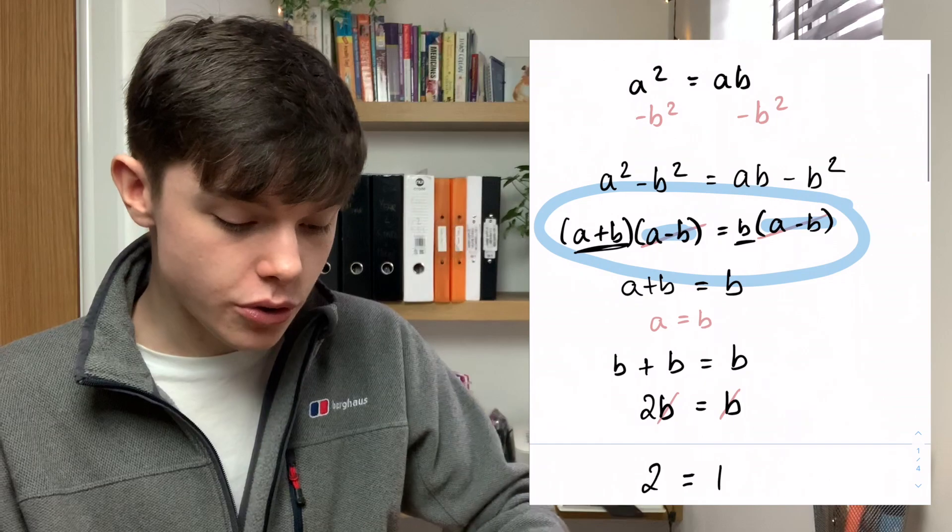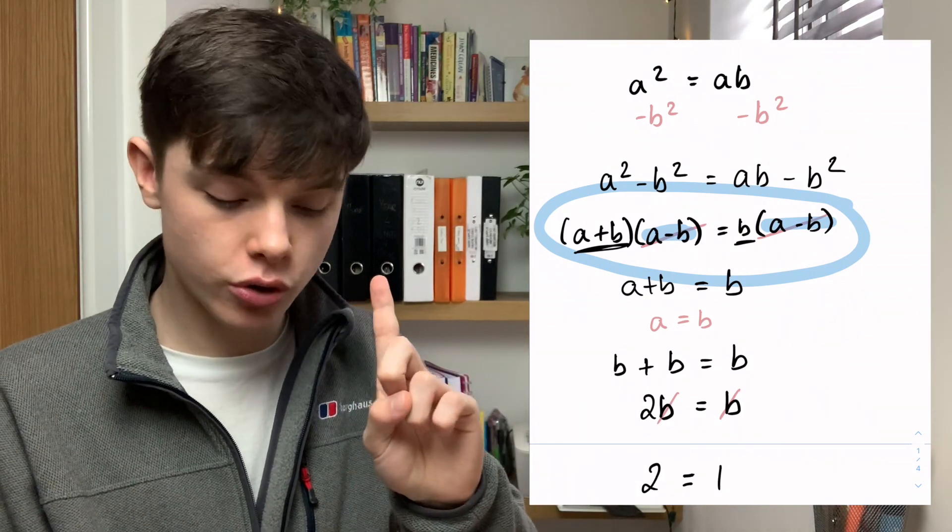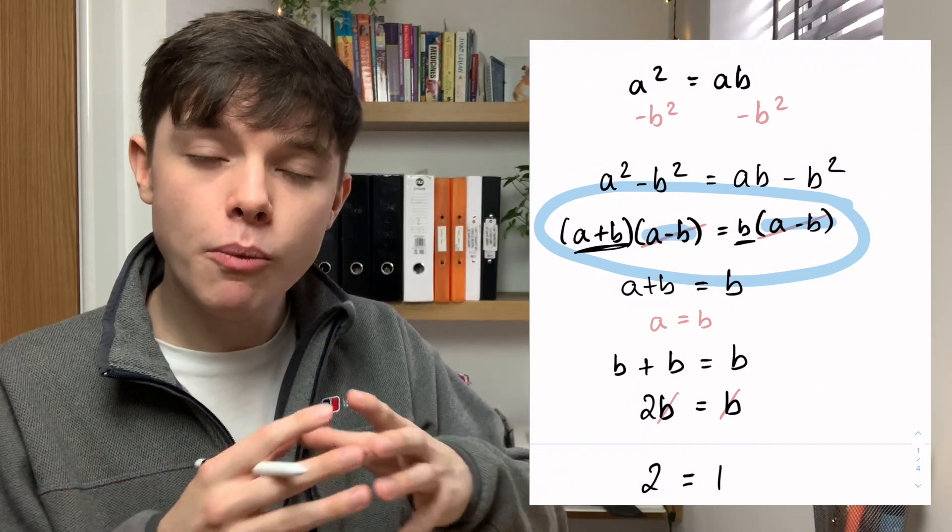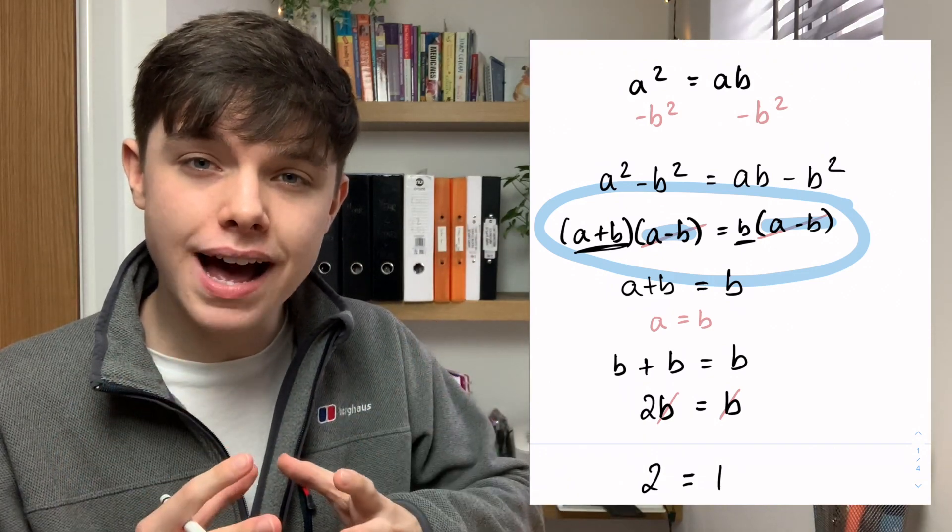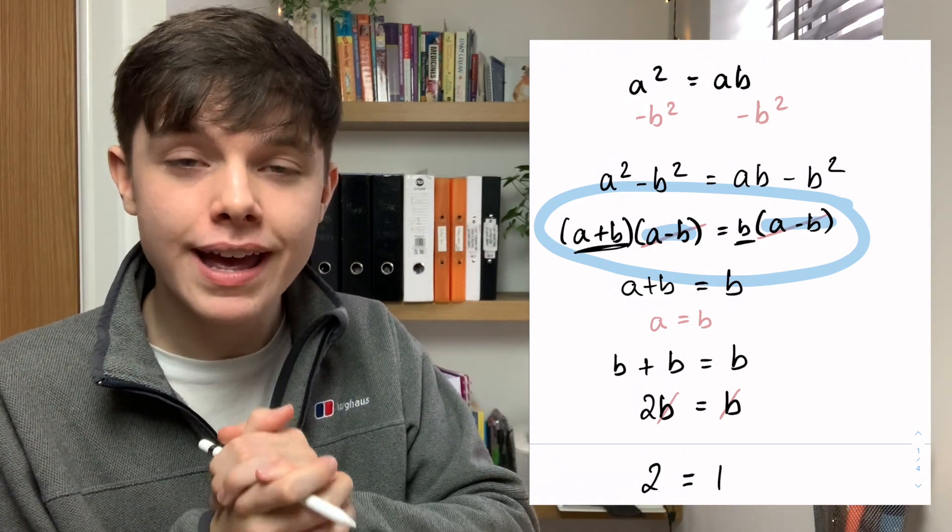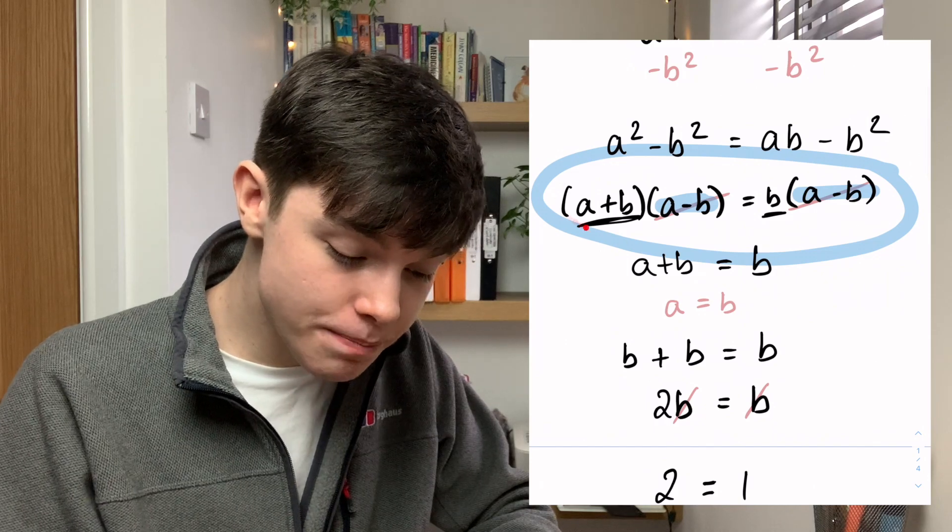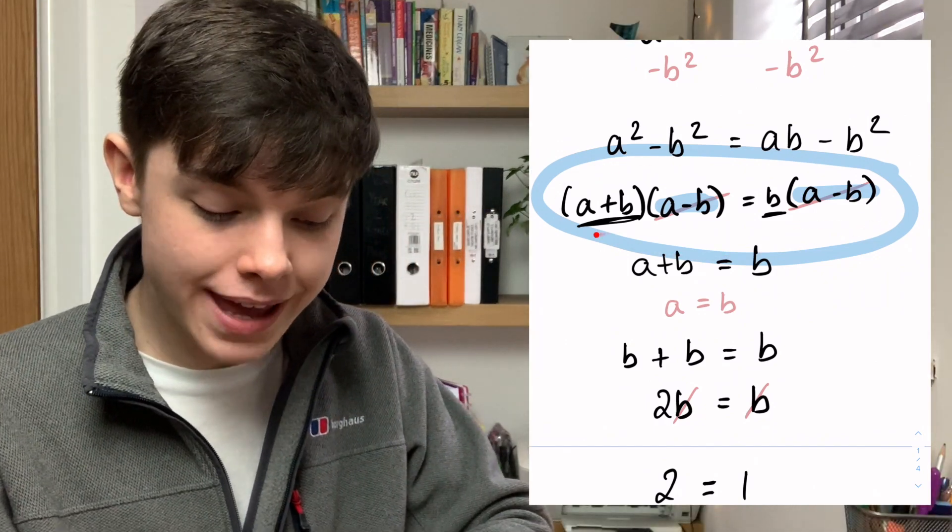So what did we do in this step that is circled in blue? We cancelled (a - b) out. Now when we cancel something from both sides what we're actually doing is dividing both sides by that thing we're cancelling. So here we are dividing both sides by (a - b).